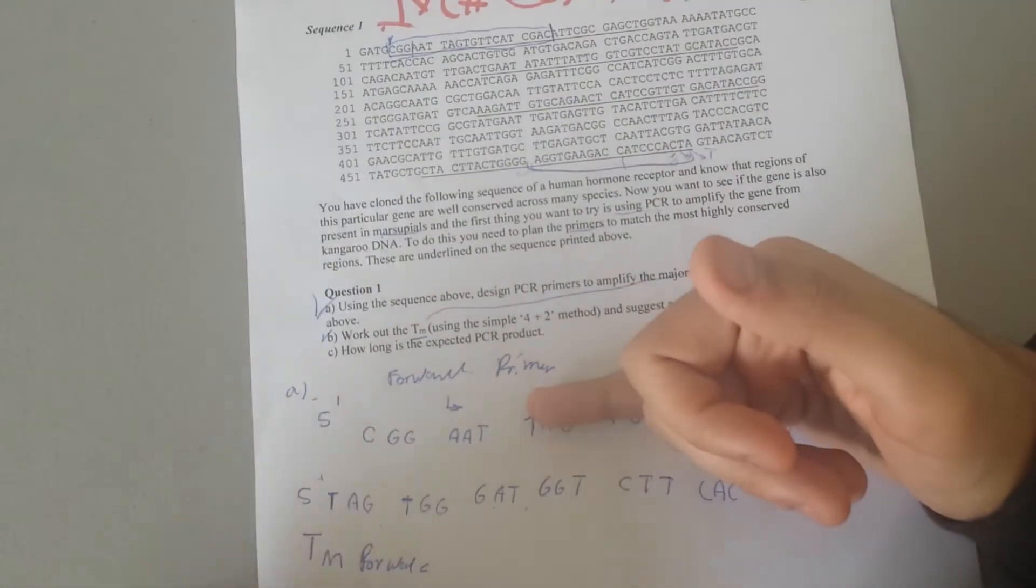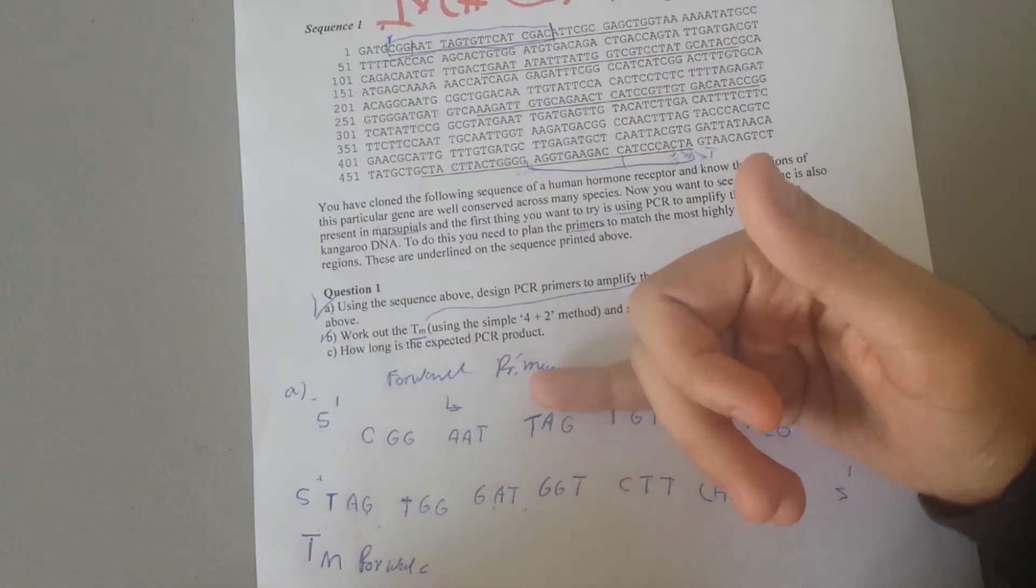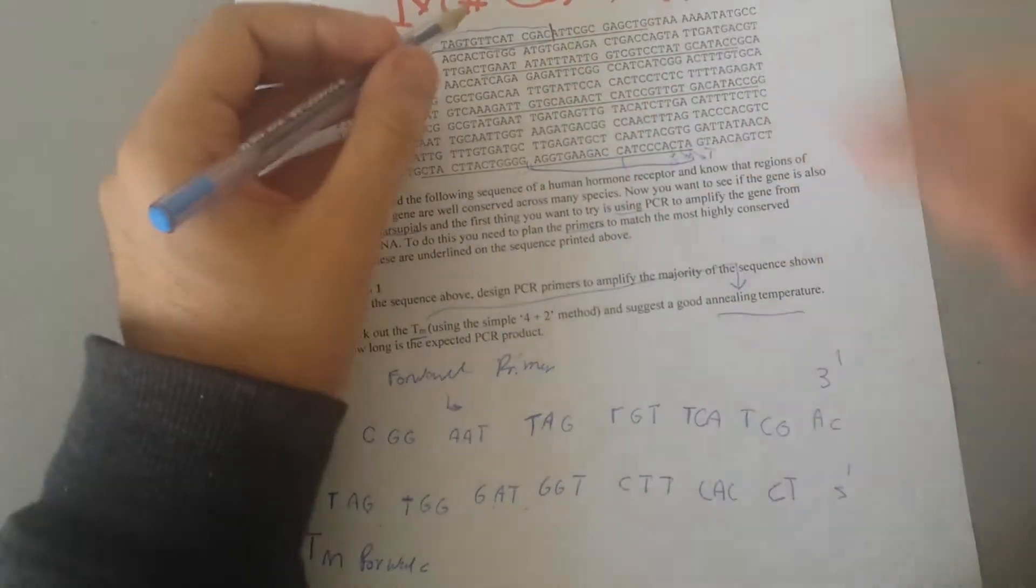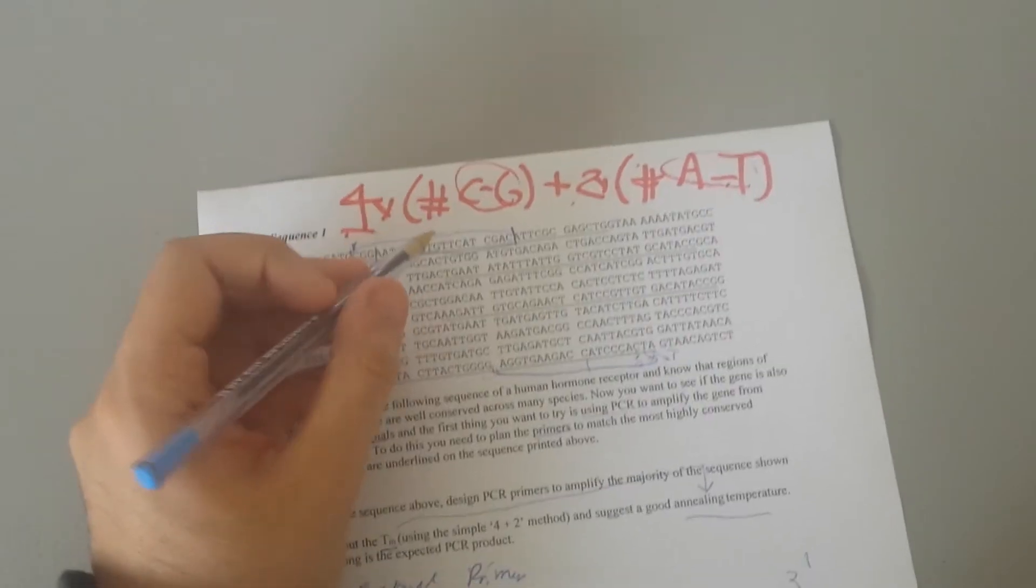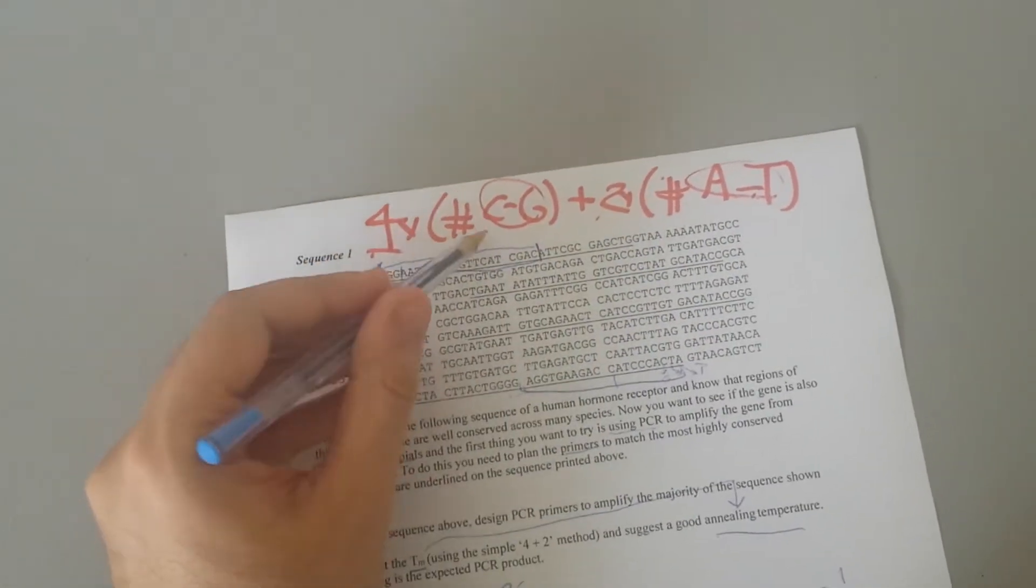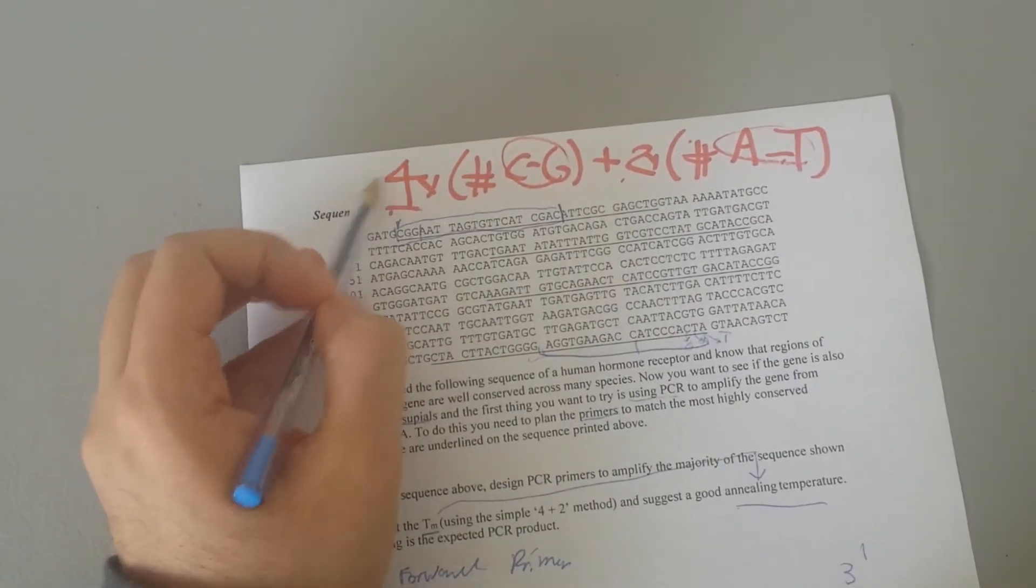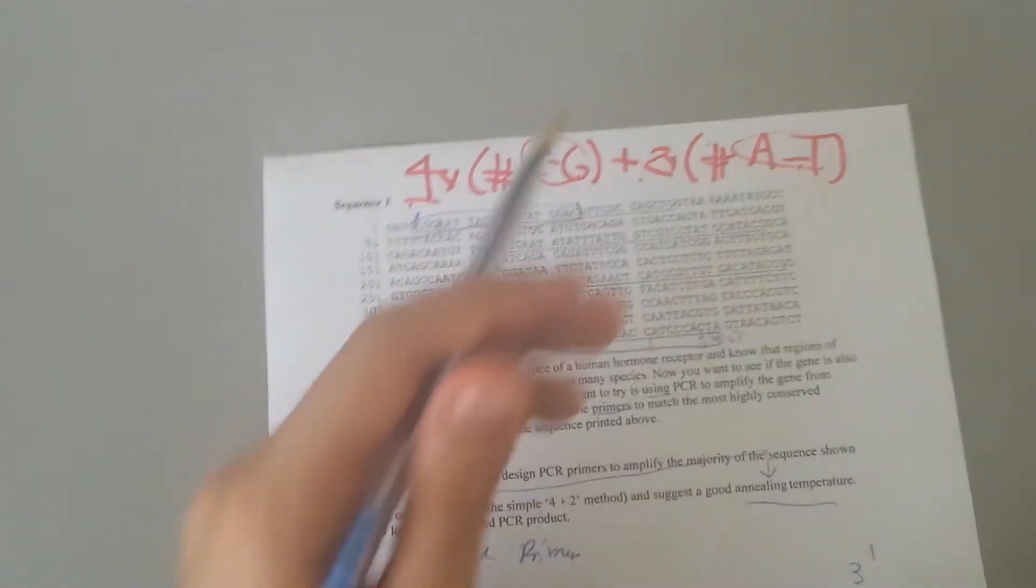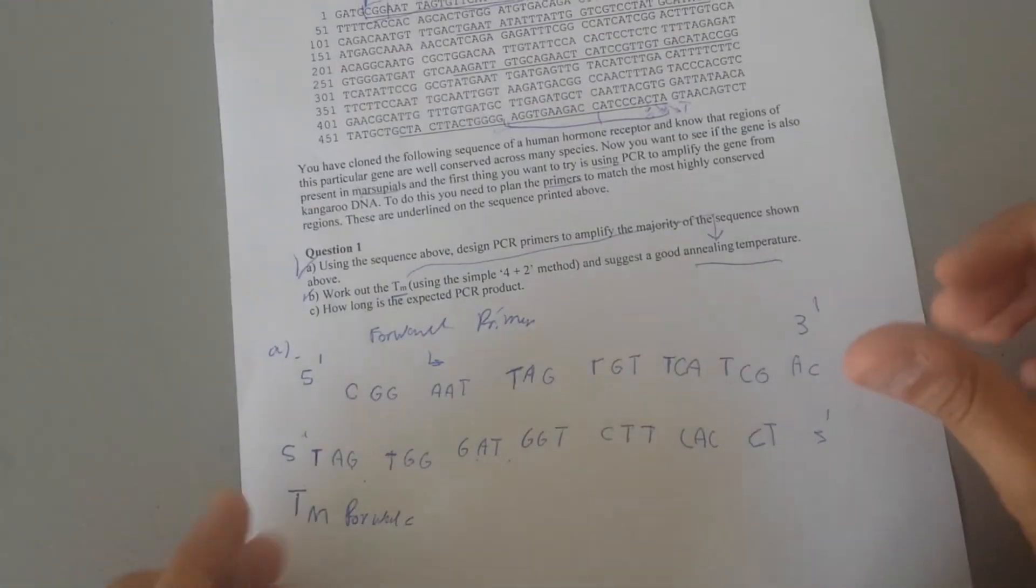Now from here I was going to work out TM where my video stopped recording. I'm going to show you this equation here. If you have four times the number of CG nucleotides and two times the number of AT nucleotides, this is one very common way scientists use to calculate the TM melting temperature.